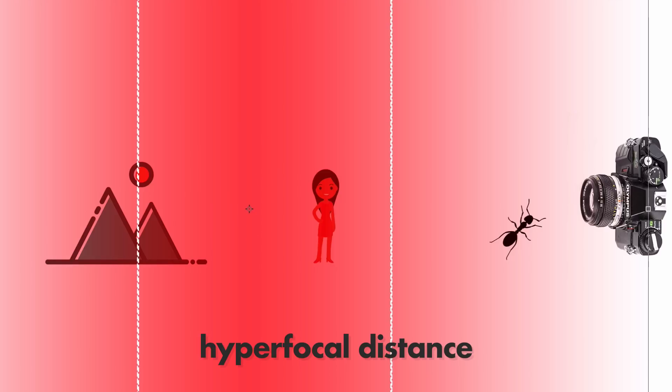I hope that definition made it clearer than a text definition - this is at least how I view it. It's very useful to know and apply. If you're doing landscape photography where you have objects both close to the camera, like a rock, and far away, like a mountain, and you want to keep as much as possible as sharp as possible, then knowing and applying hyperfocal distance is very valuable.